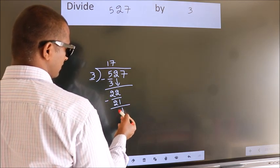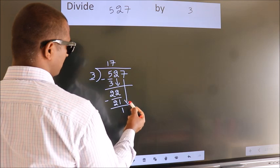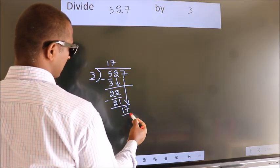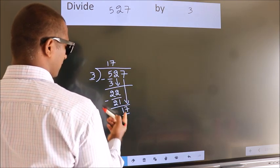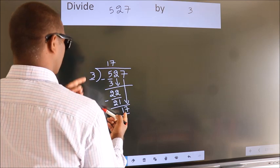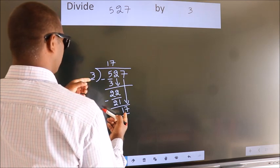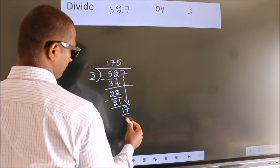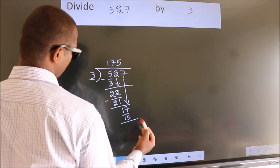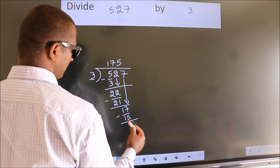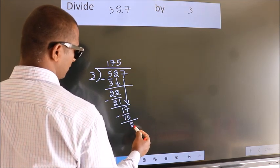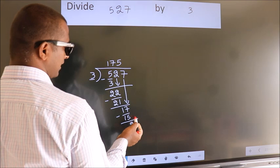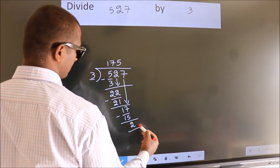After this, bring down the beside number. So 7 down, so 17. A number close to 17 in the 3 table is 3 5s = 15. Now we subtract. We get 2. No more numbers to bring down, so we stop here.